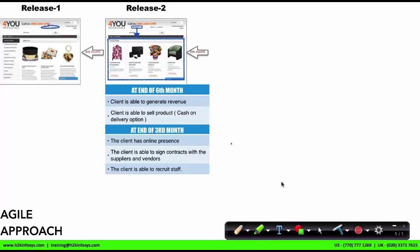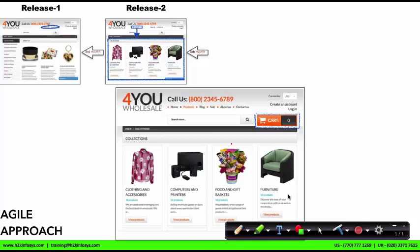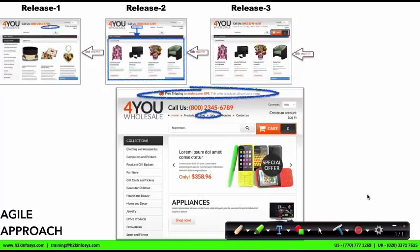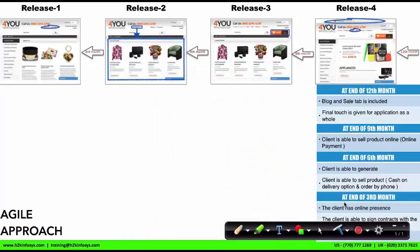Next, again to add early value to the business, I commit to the client to deliver an add to cart feature and online payment facility, which allows the customer to purchase the product with online payment by the end of the ninth month. Let's name this release three. Lastly, I promise the client to implement good-to-have features like a blog tab, sale tab, and some finishing touches by the end of the ninth month, calling it release four and making it a complete project.